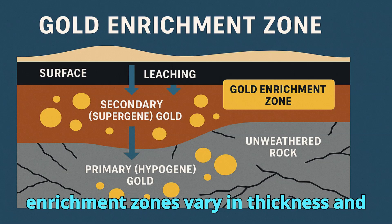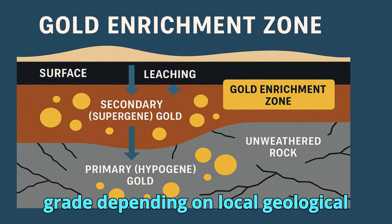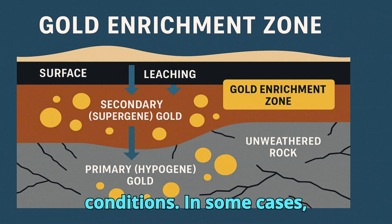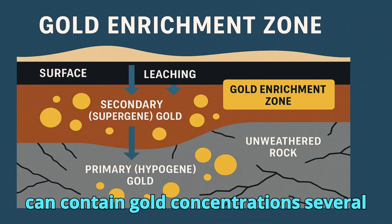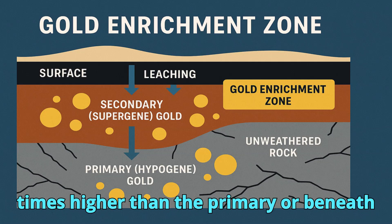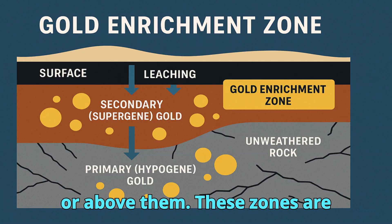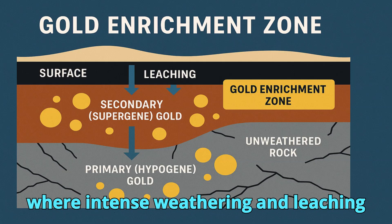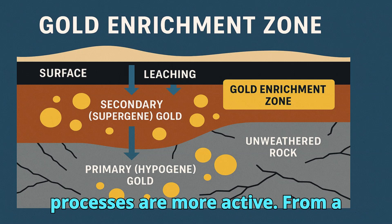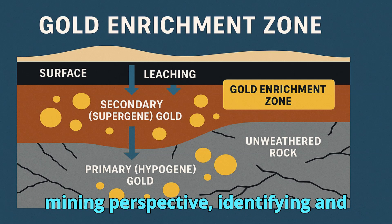Gold enrichment zones vary in thickness and grade depending on local geological conditions. In some cases, they may only be a few meters thick but can contain gold concentrations several times higher than the primary ore beneath or above them. These zones are particularly common in tropical climates, where intense weathering and leaching processes are more active.